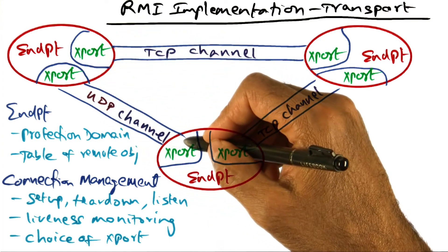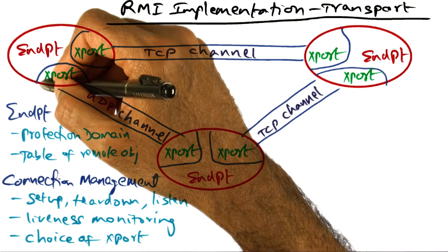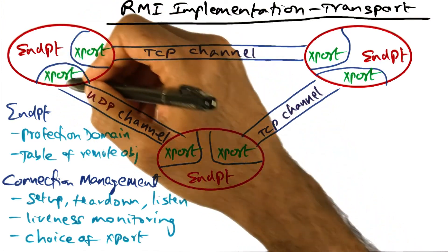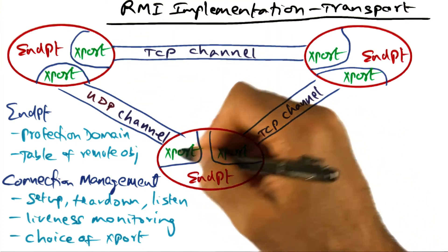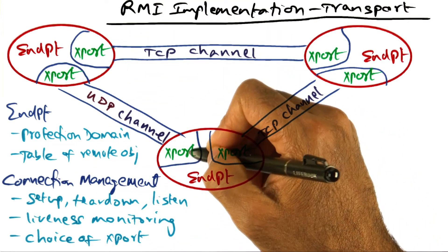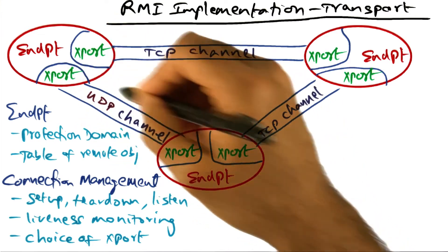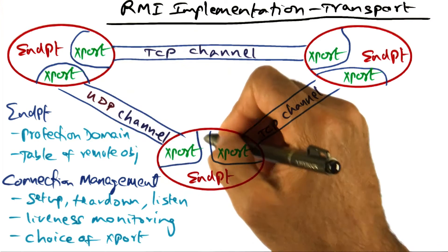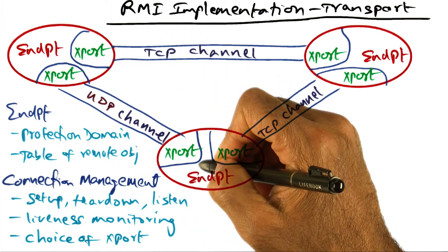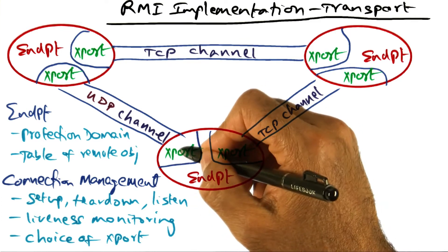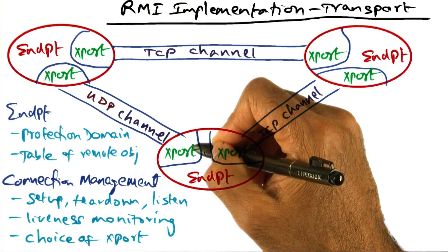When a connection is established between two endpoints, the abstraction called transport comes into play. For instance, between one endpoint and another, the connection manager may decide to have UDP transport, so a channel is established between these two endpoints to do UDP transport.